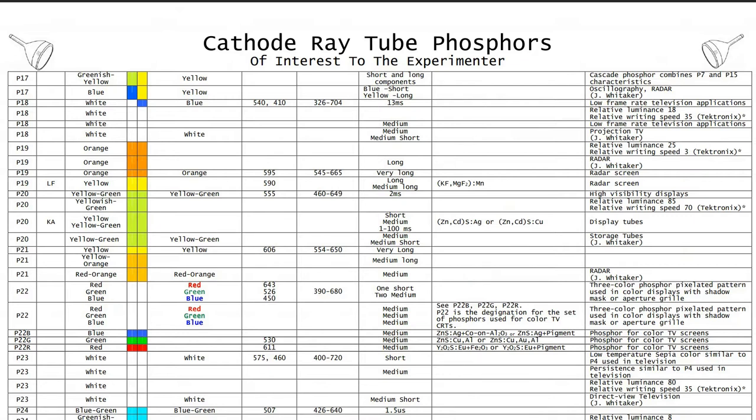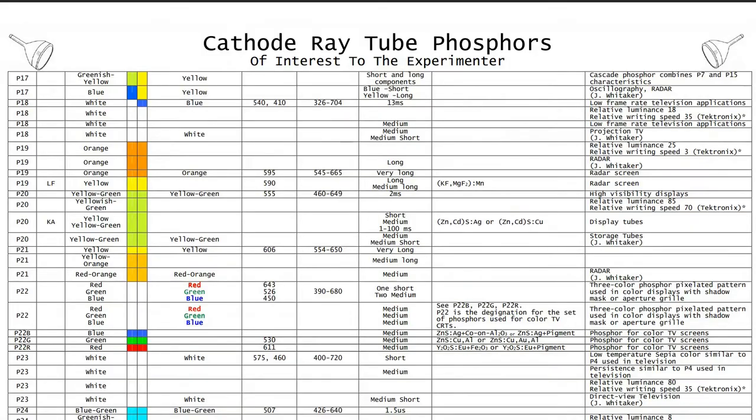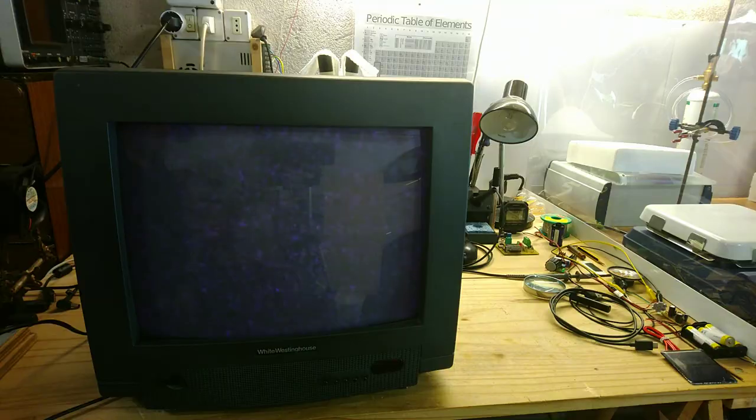Of course, color CRTs do not contain a single phosphorescent material, a fact that can be easily observed by watching an old TV very closely. When the screen is turned off, vertical colored stripes can be seen, and when it is turned on, again looking very closely, you can see groups of three dots,